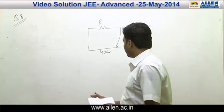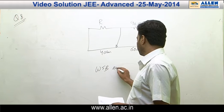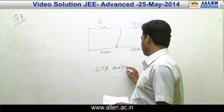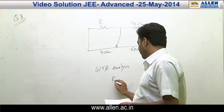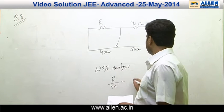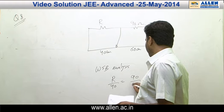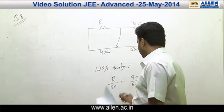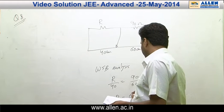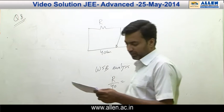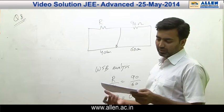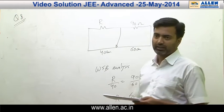Applying the basic Wheatstone bridge analysis, we have R by 40 equals 90 by 60, which gets you R as 60 ohms. You find that only options A and C would be satisfying this result.